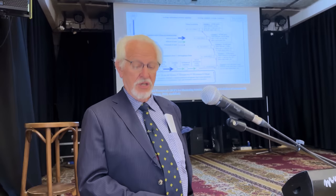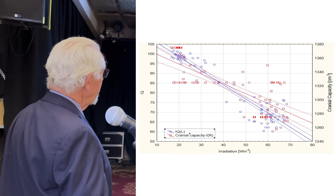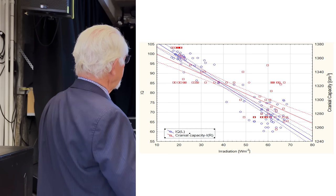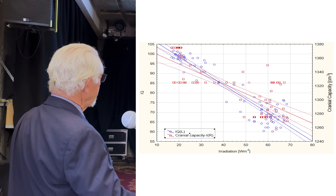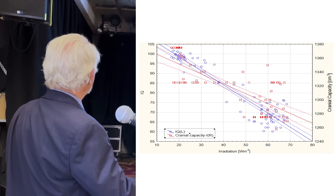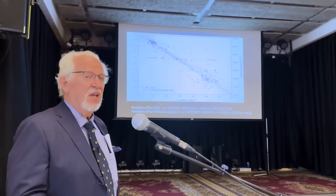Irradiation measured in watts per square meter shows low intensity in the north and high intensity in Africa. The African countries with very high intensities have quite low cranial capacity and quite low IQs. When you go up to the Middle Eastern countries, lower irradiations and higher IQs of 80 to 85, and a brain size around 1,320. And then up in Northern Europe — Scandinavia, England, Germany — you have IQs around 95 to 105, and a brain capacity just about 100 cubic centimeters larger.